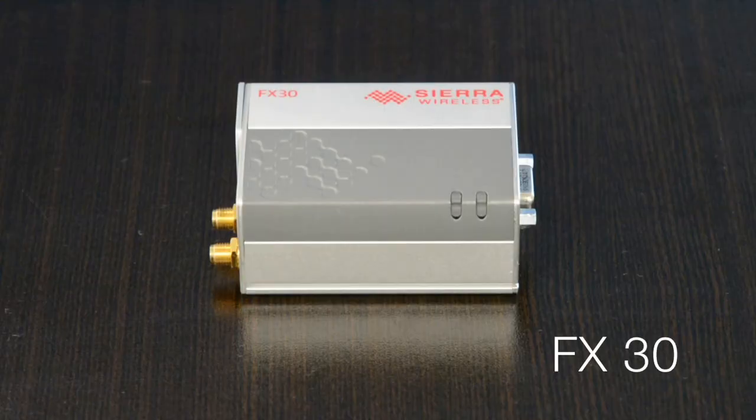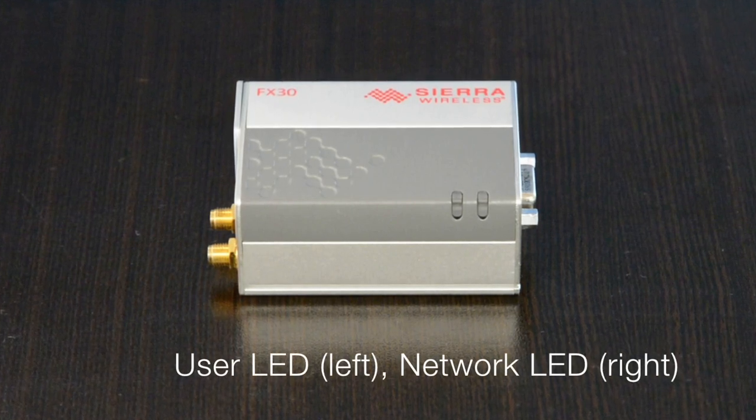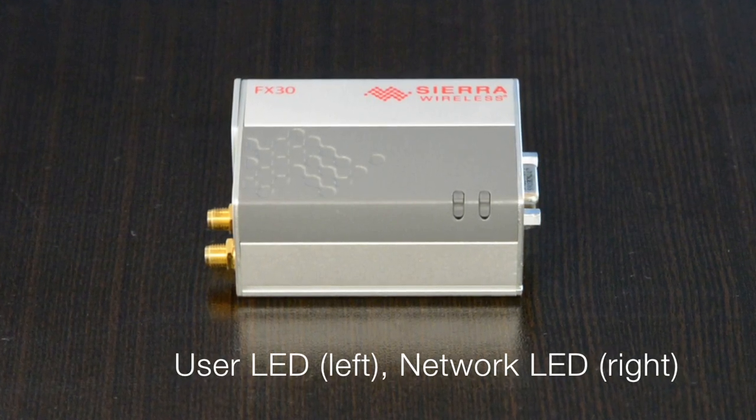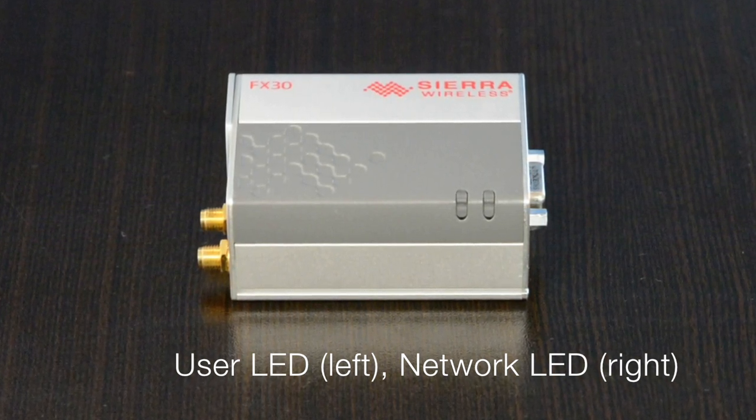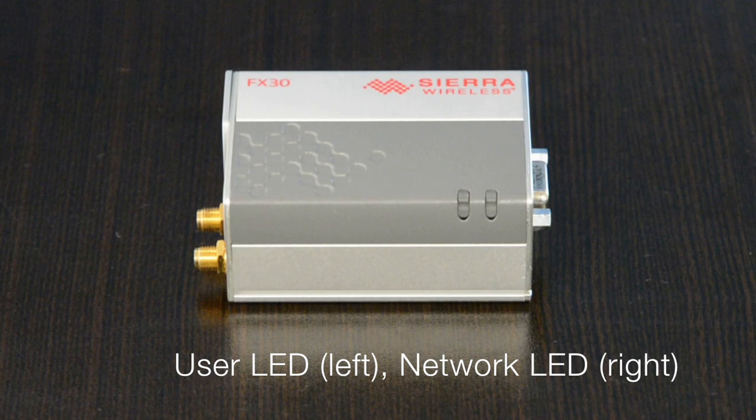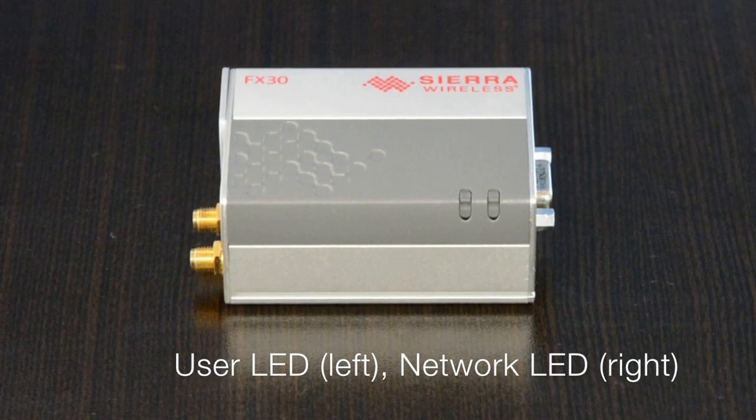Now let's take a closer look at the FX-30 unit itself. On the front of the FX-30, it can be seen that there are two LED lights. The leftmost will be referred to as the user LED, which will be used to communicate the status of the FX-30 to the user.